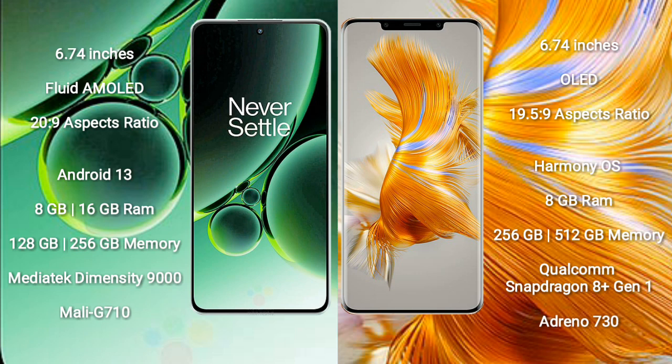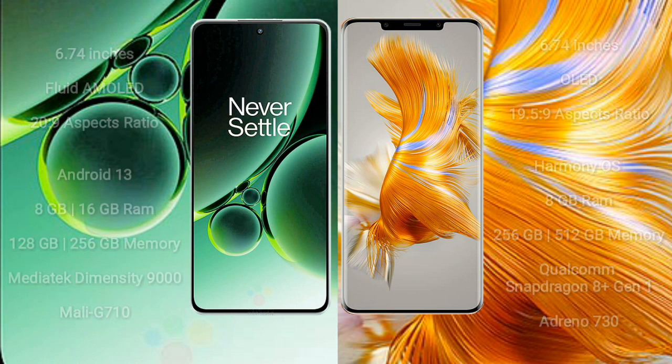OnePlus Nord 3 comes with 8GB and 16GB RAM, 128GB and 256GB internal storage, MediaTek Dimensity 9000 processor, and GPU Mali-G710. Huawei Mate 50 Pro comes with 8GB RAM and 256GB or 512GB internal storage, Qualcomm Snapdragon 8 Gen 1 processor, and Adreno 730 GPU.